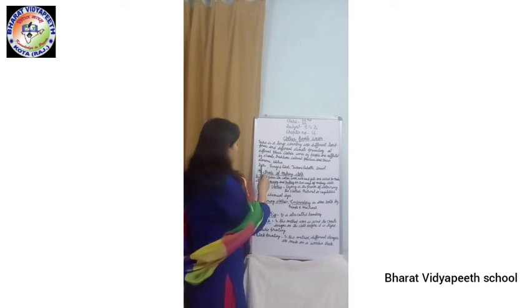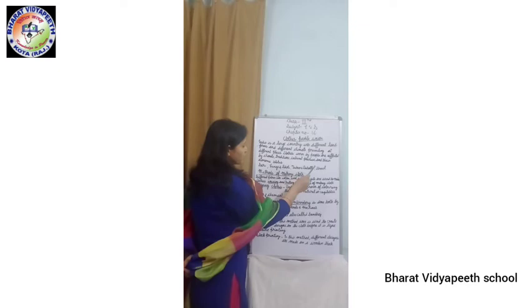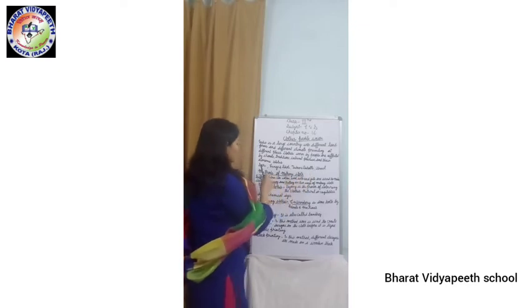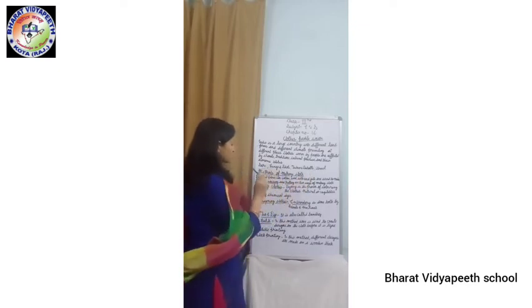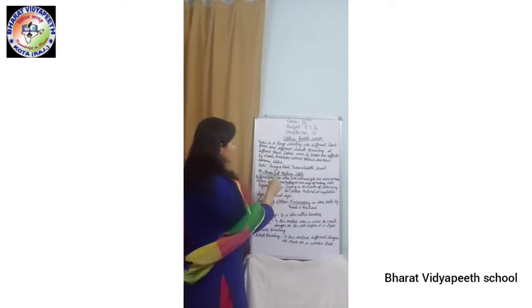Now some examples of clothes: sari, lungi, dhoti, turban, and dupatta and shawl — these are all unstitched clothes. Sari is worn by women, and lungi and dhoti are worn by men.